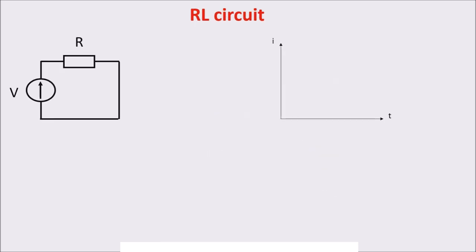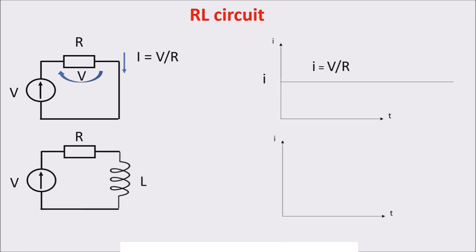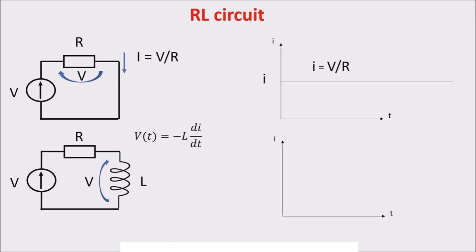Now we see how an inductor works in a simple circuit. First, let's see the current in a simple circuit with a static voltage generator and a resistor. At time zero, when we switch the voltage on, instantly the current goes to the value V divided by R. If we now insert an inductor in the circuit, when we switch the direct voltage on, the current behavior changes because the inductor opposes the changing. So at instant zero, the circuit tries to force a current on the inductor, creating an increasing magnetic field which generates an EMF that opposes the passing current.